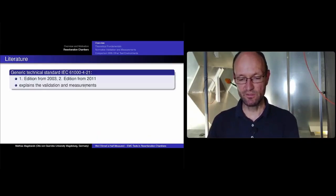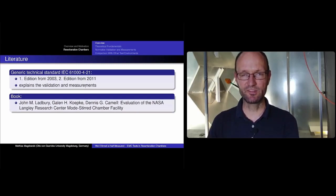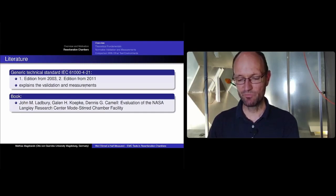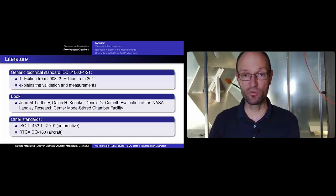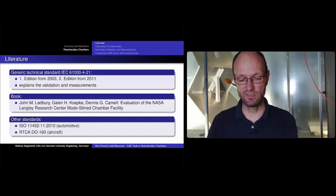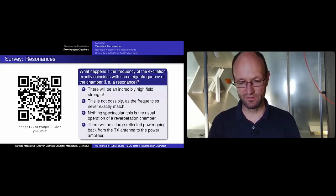For literature, there is the IEC standard, with a first edition from about 20 years ago and a second edition from 2011, covering validation and measurements. There's also a very readable report from NIST by Galen Koepke, John Ladbury, and Dennis Camell evaluating a chamber used for NASA tests. Other relevant standards include an ISO standard for the automotive world and the DO-160 standard for aircraft equipment.